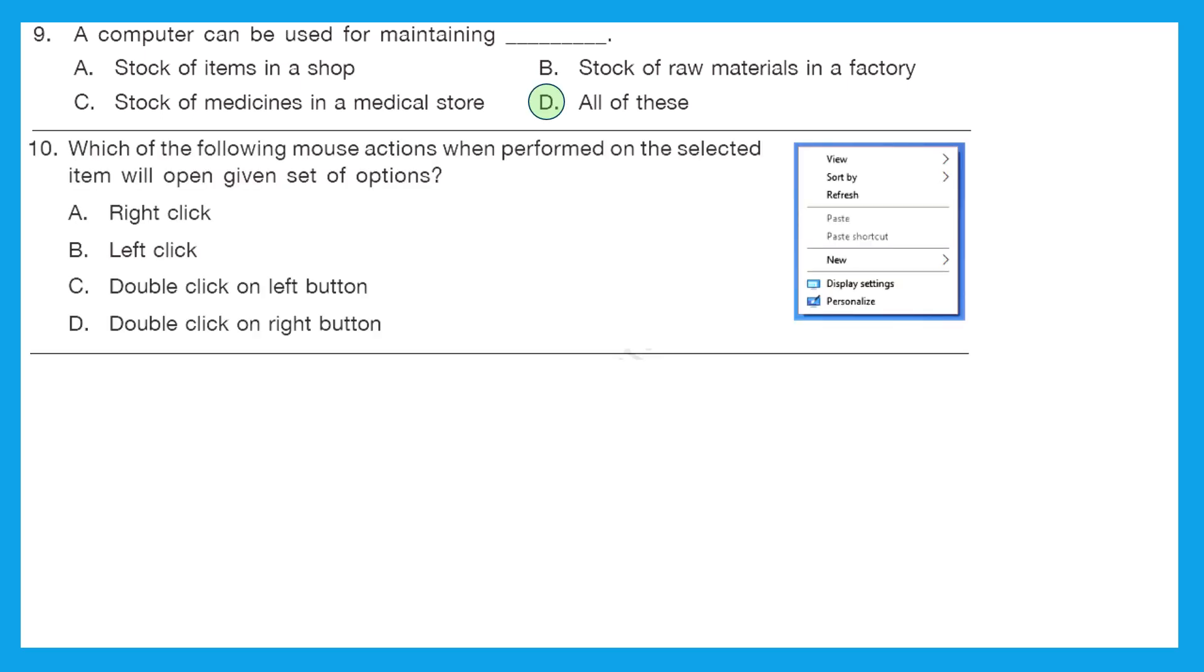Question 10: which of the following mouse actions when performed on the selected item will open given set of options? Let's see the options. It has view, sort by, refresh, new, display setting and personalize. So what should we do with mouse or what should we click on mouse to get this? We should do right click. Option A is the right answer.